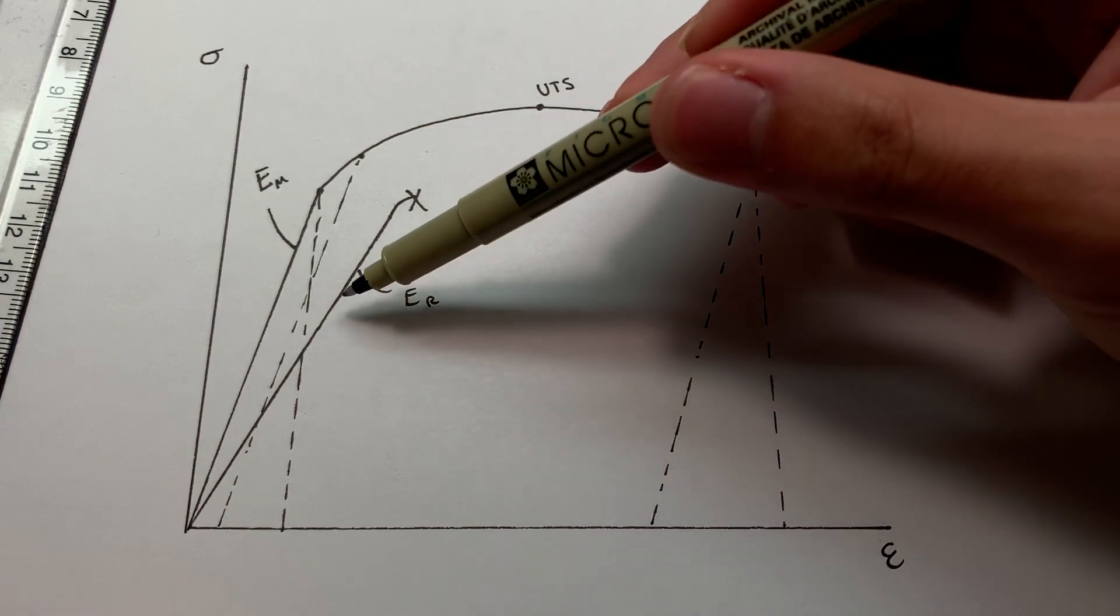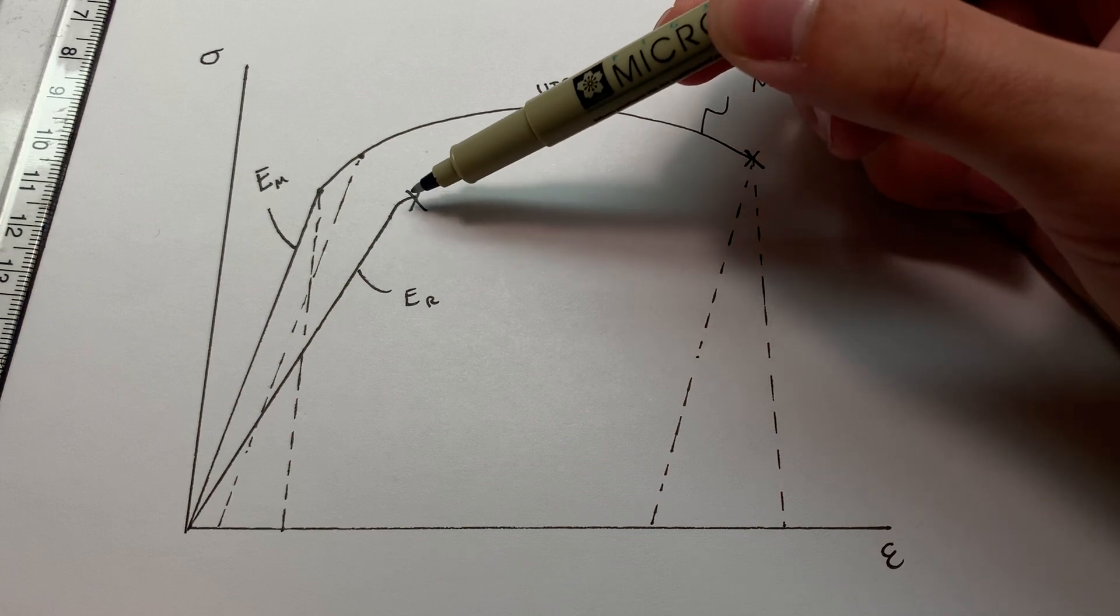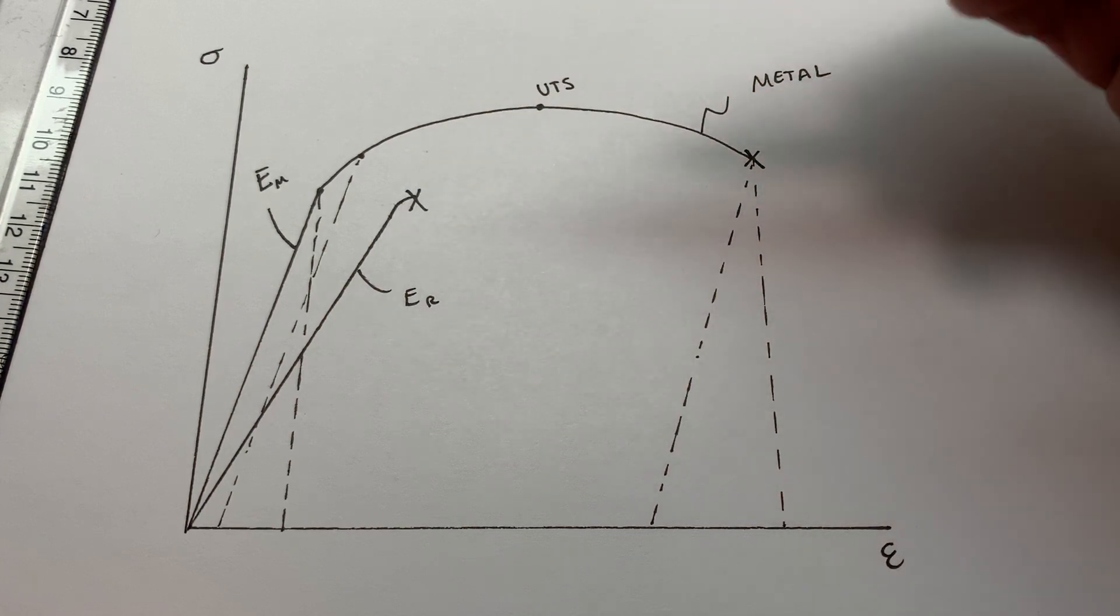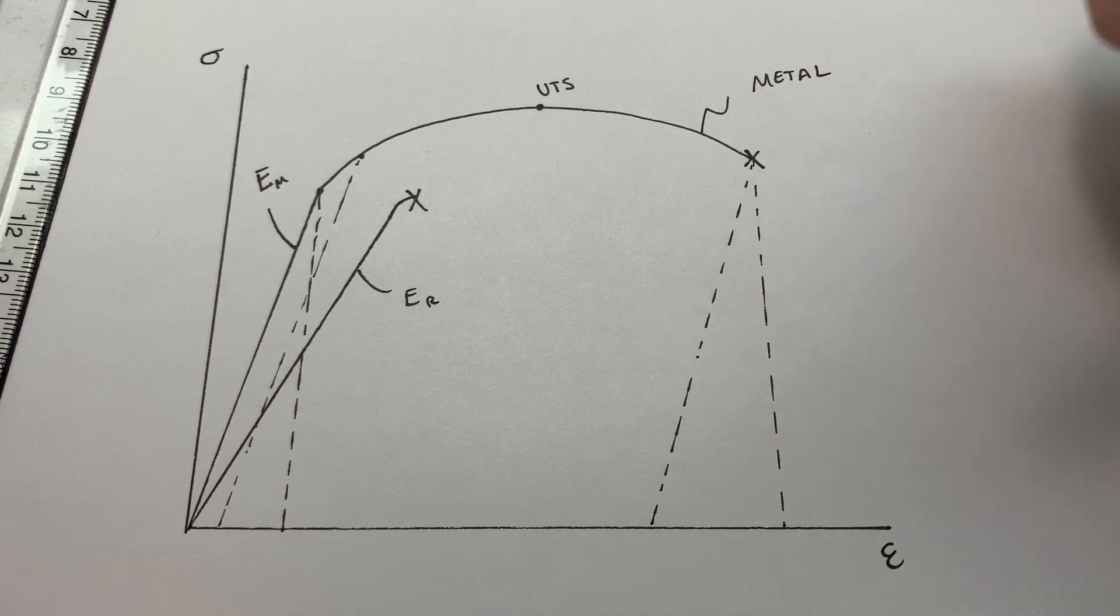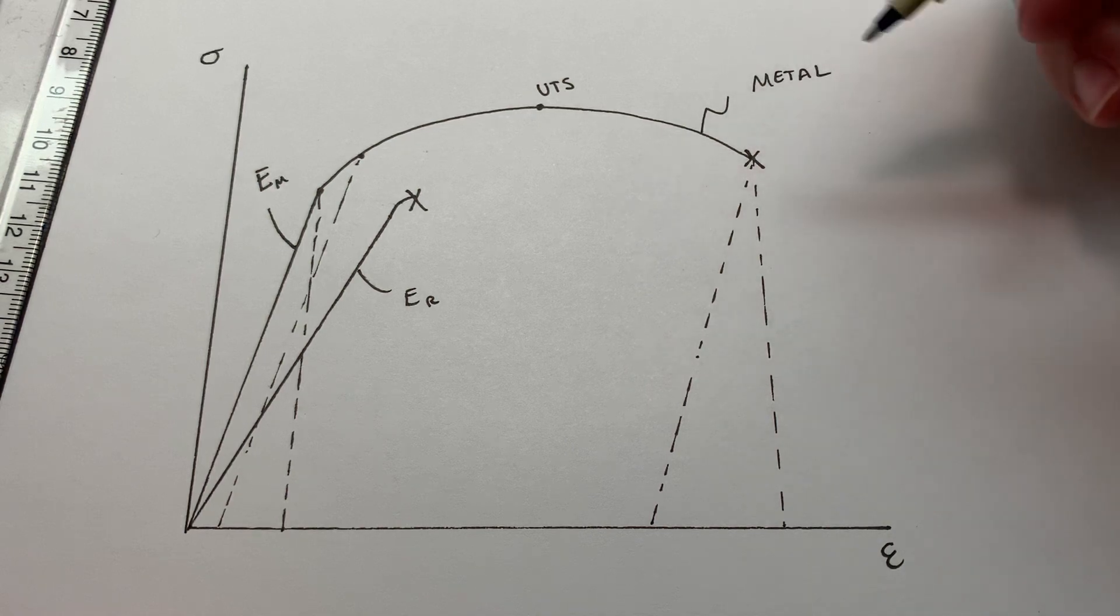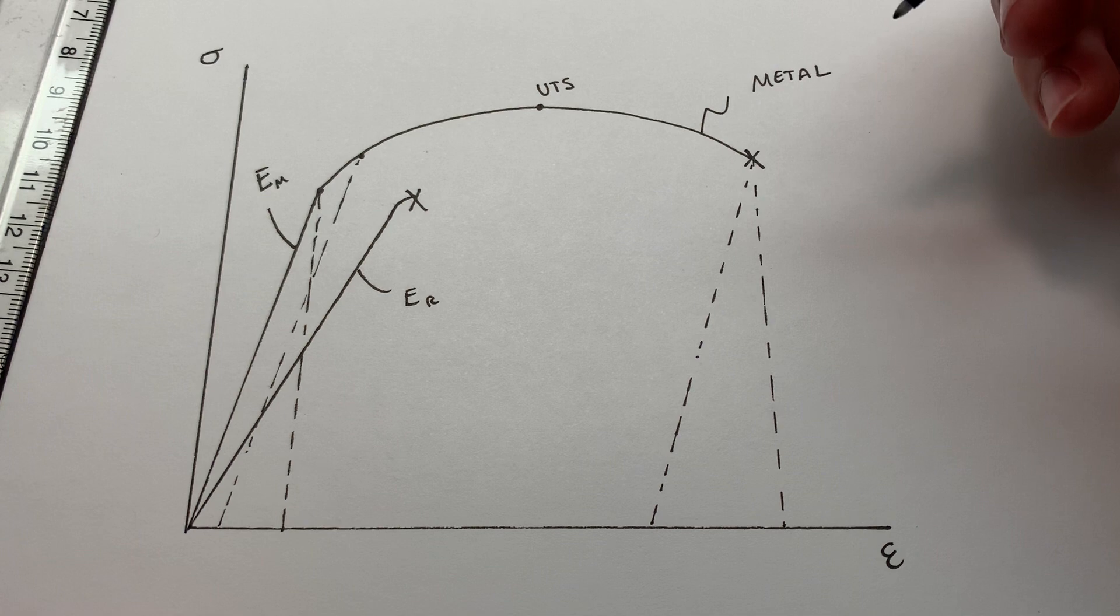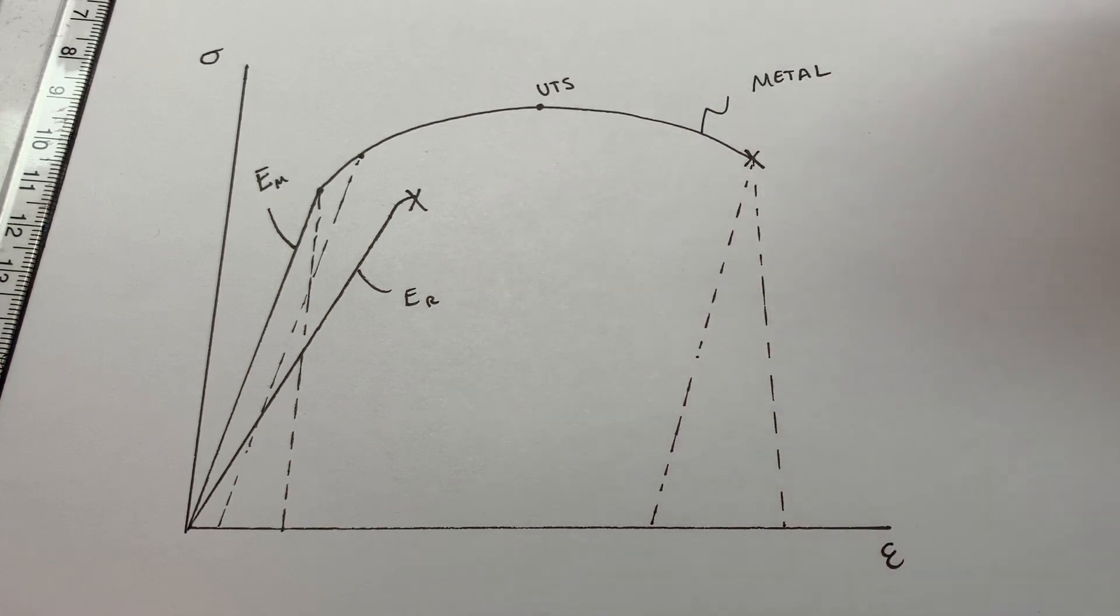So the metal has ductility, the rock does not. Hits that, bam, which means the failures here are going to be catastrophic. It's going to happen all of a sudden, it's going to be brittle. You're not going to have the necking and then eventual rupture. It's just going to happen like that. Boom.